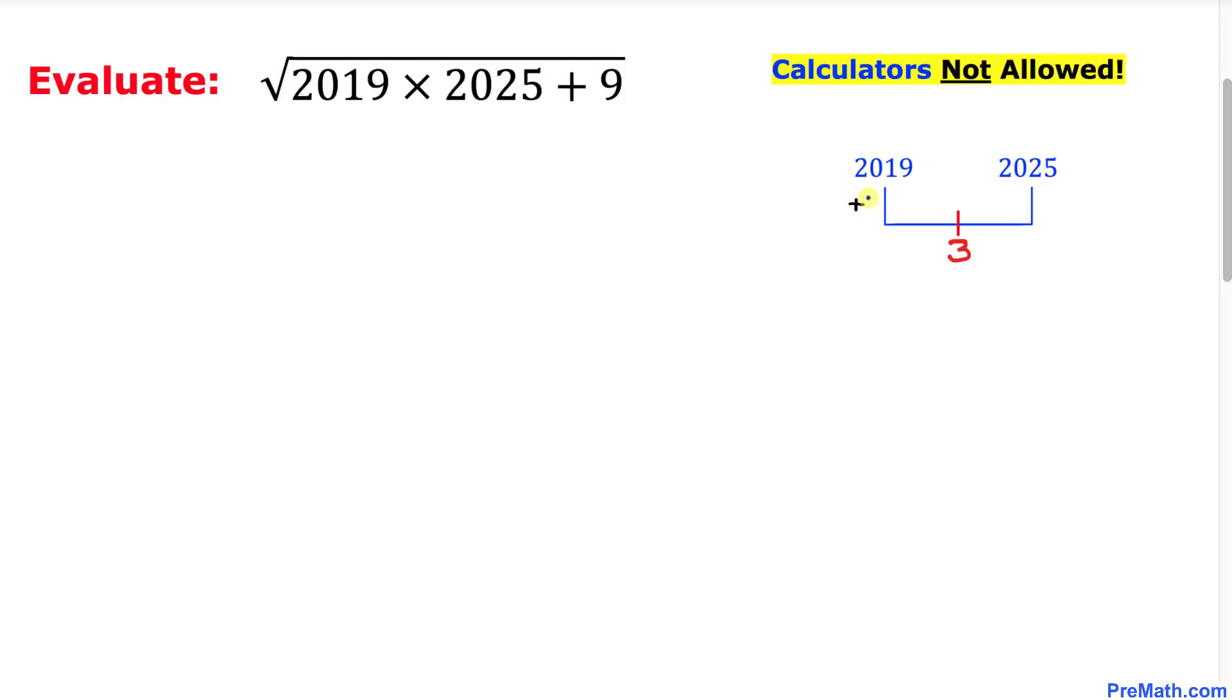I am going to add three on this side and subtract three on this side. So we can see 2019 plus three is going to give us 2022, and likewise 2025 minus three is going to give us 2022 as well.